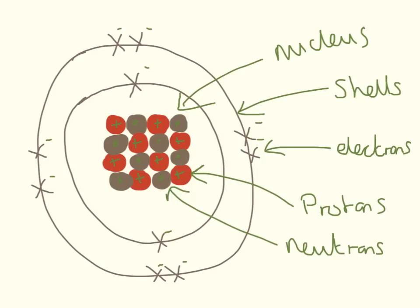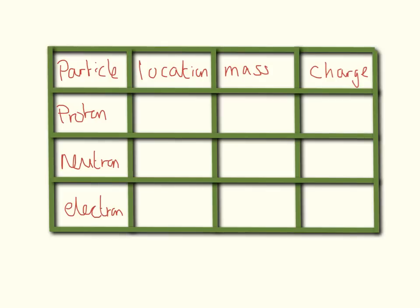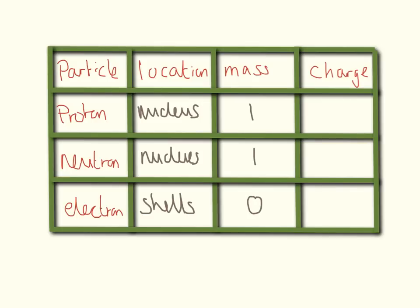The next thing you need to know about atomic structure are the charges. In the nucleus, protons have a positive charge of plus 1, and neutrons have a neutral charge of zero. Electrons, which are in the shells on the outside, have a negative charge of minus 1. So in a table: protons are in the nucleus with mass 1 and charge +1; neutrons are in the nucleus with mass 1 and charge 0; electrons are in the shells with mass 0 and charge −1.